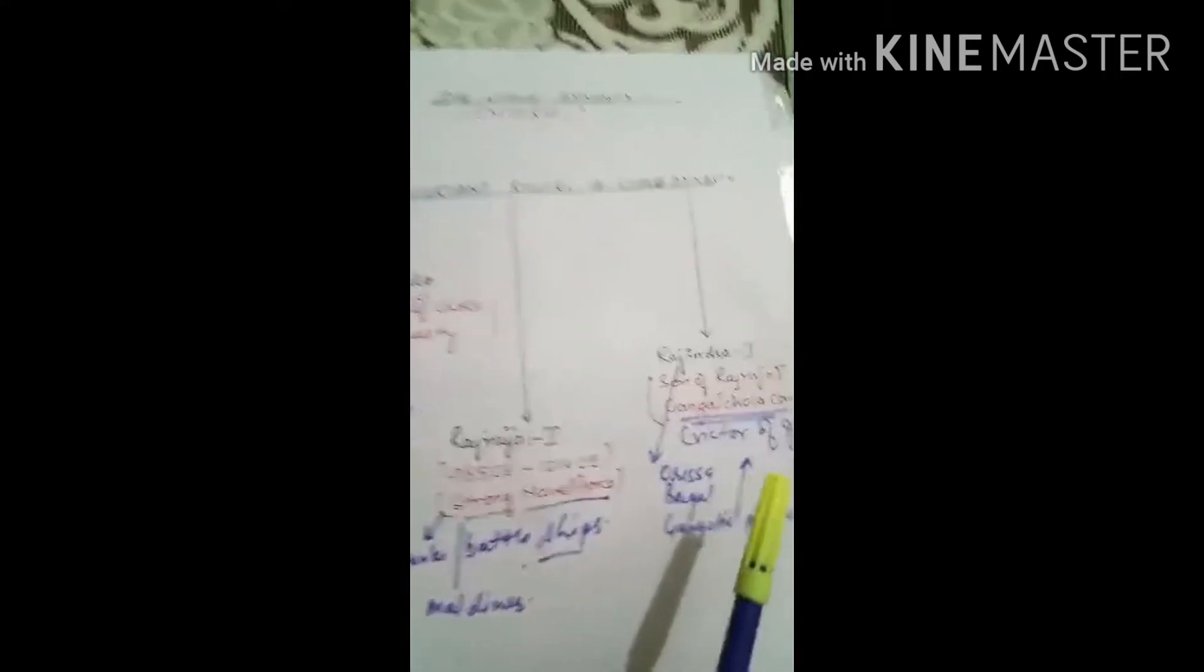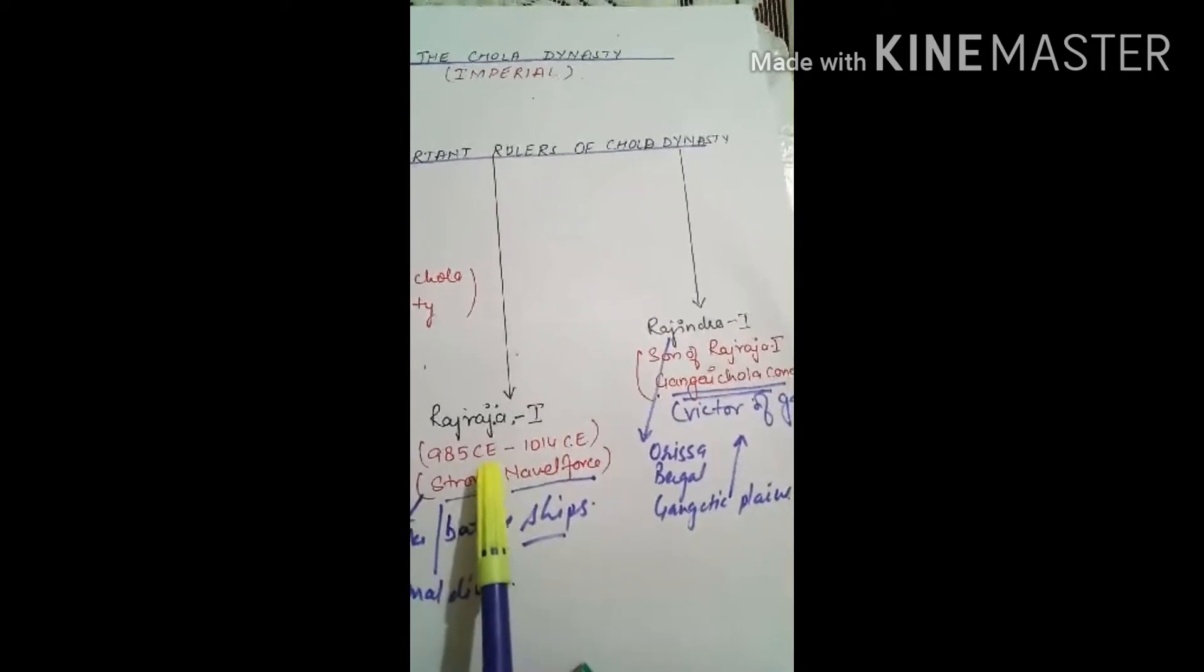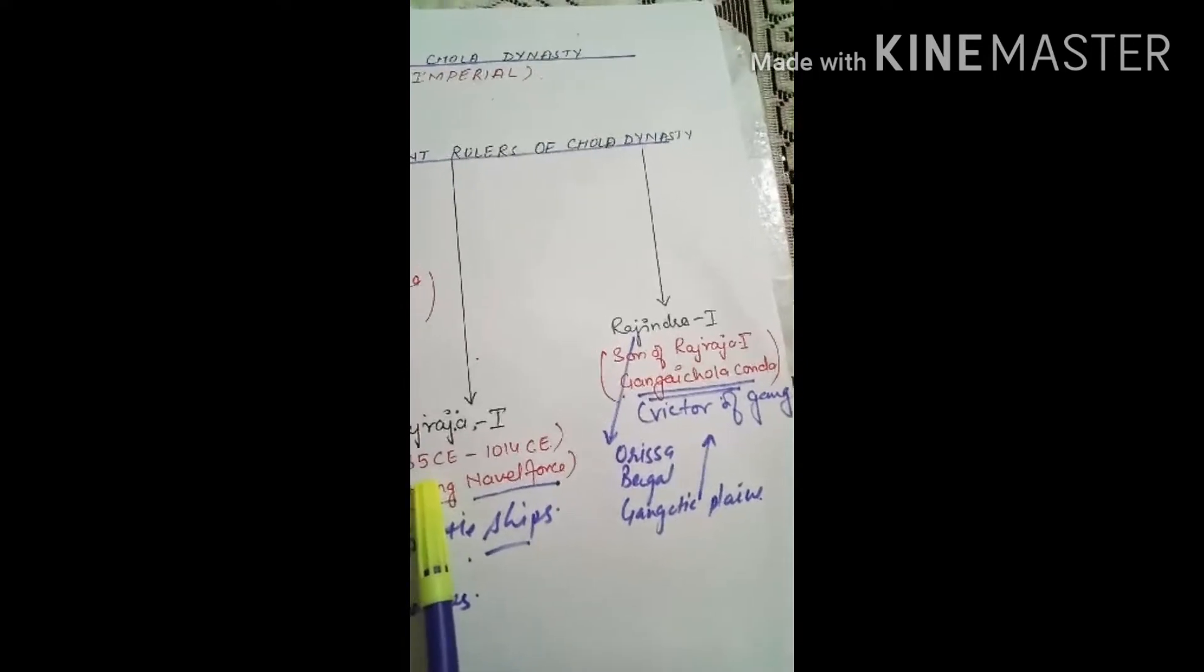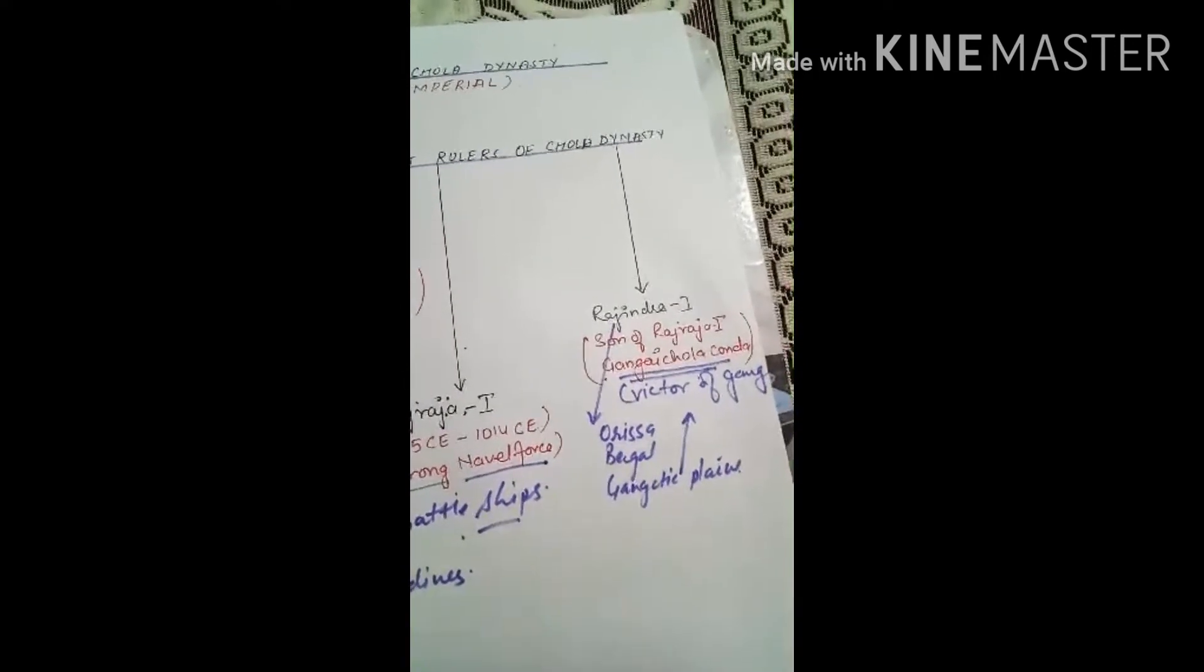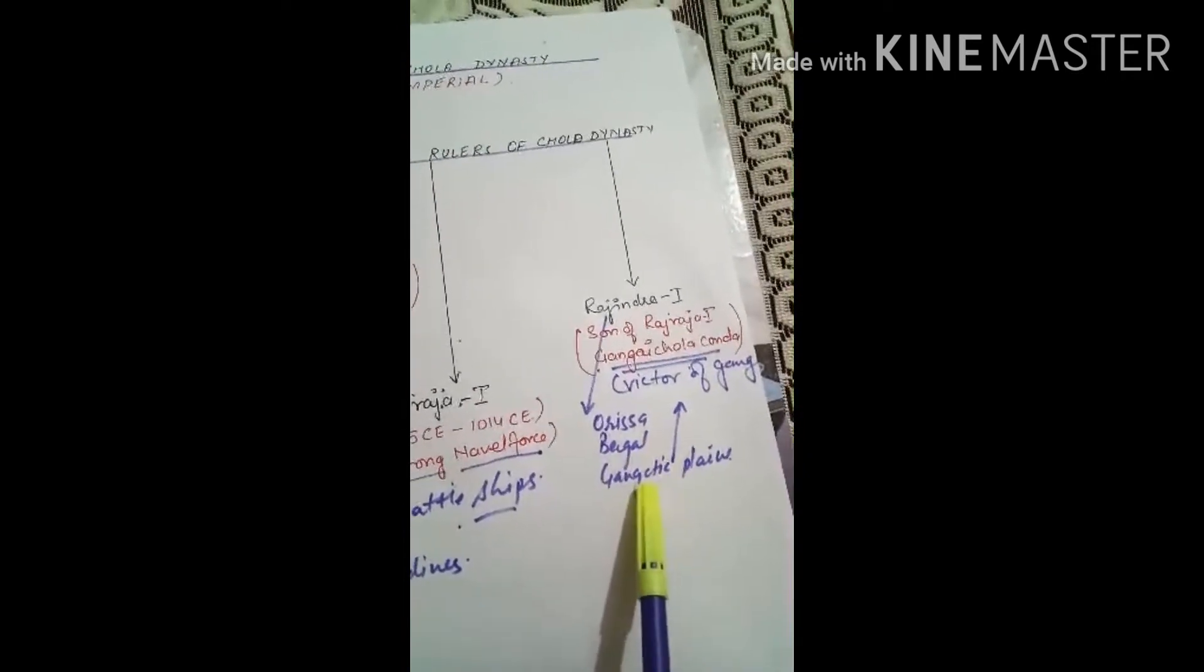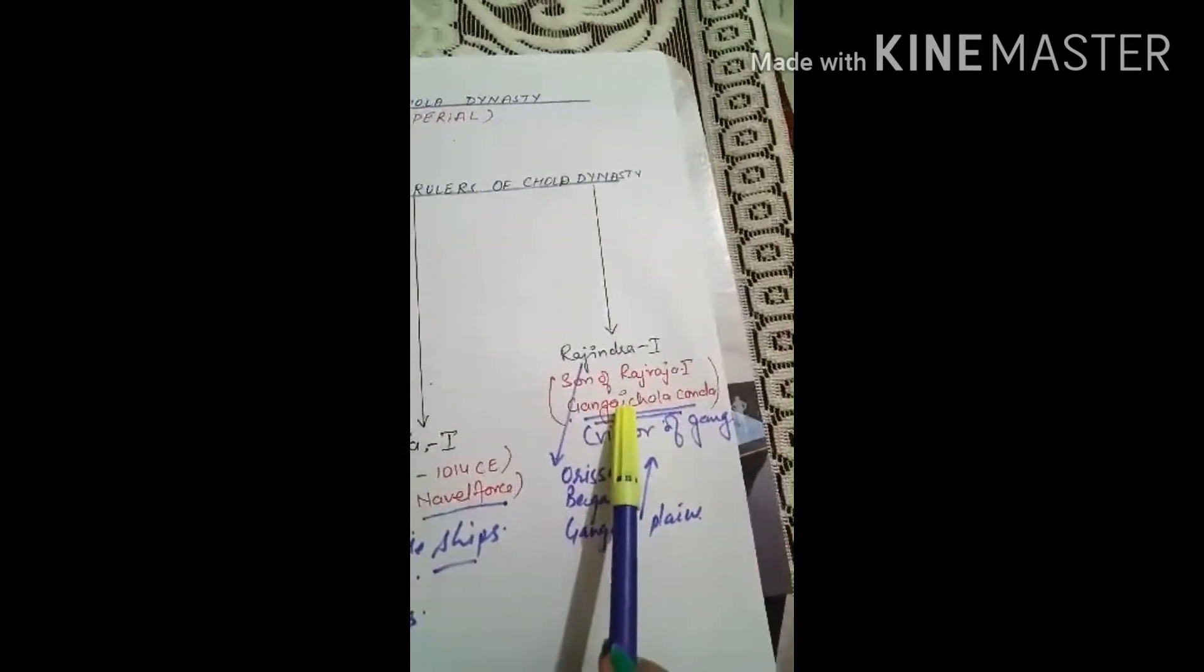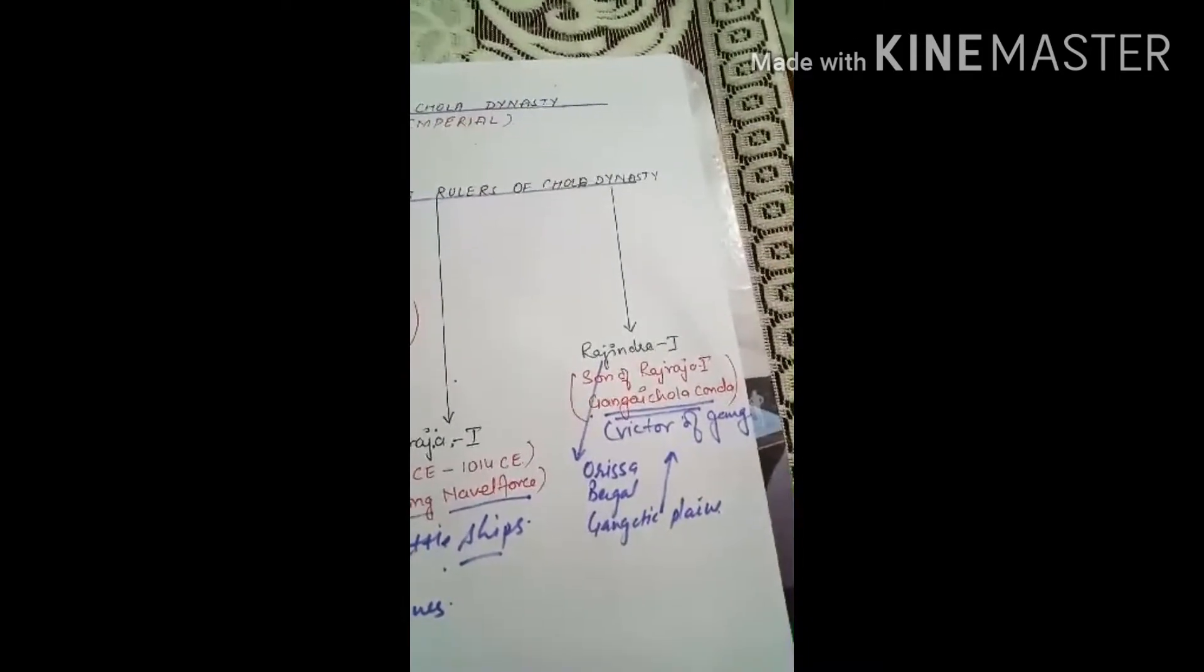Then we talk about Rajendra first, who was the son of Raj Raja first, and he conquered the northern part. Along with the southern part, he conquered Orissa, Bengal, and Gangetic Plain. After conquering the Gangetic Plain, he got the title of Gangaikonda Chola, which means Victor of Ganga.